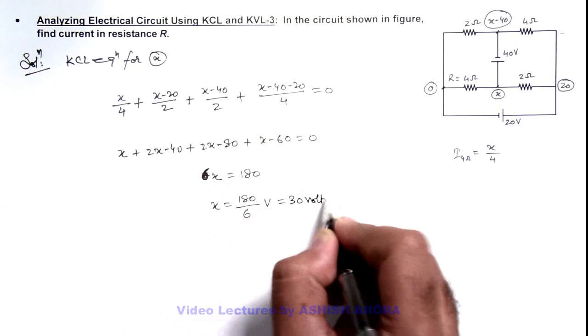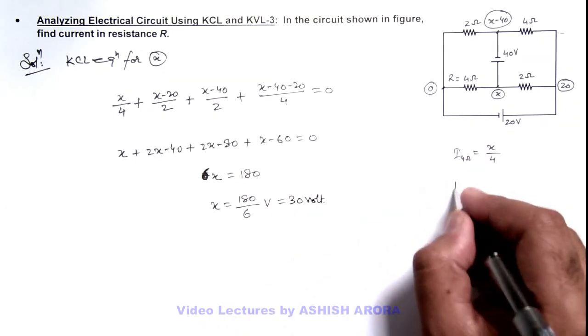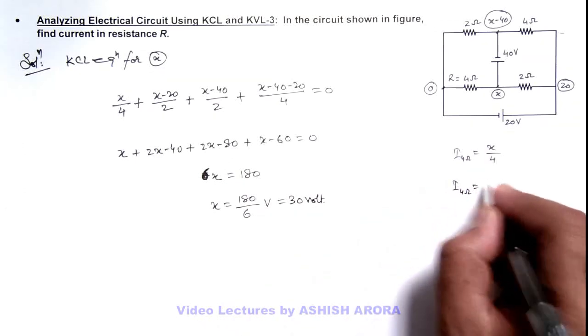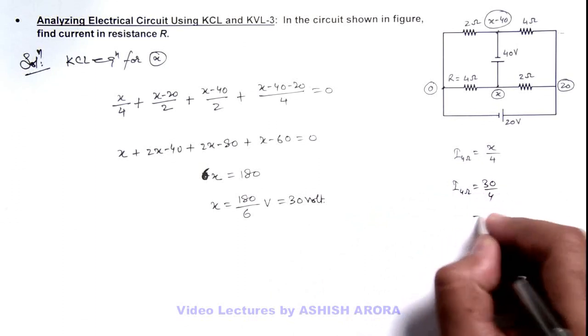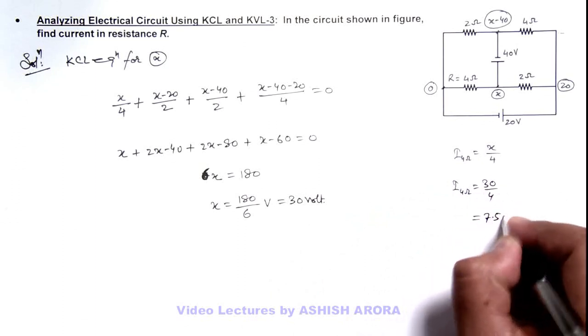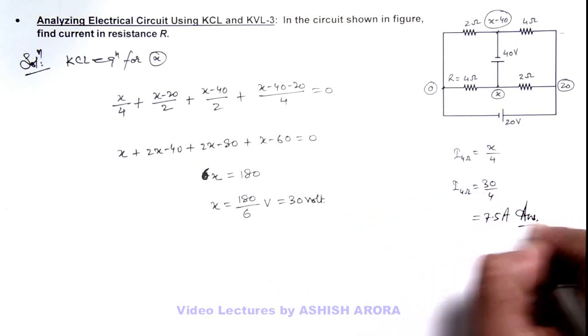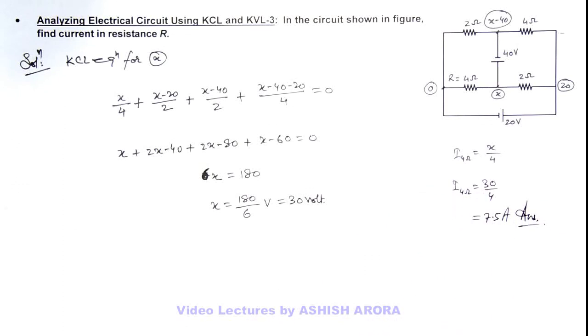So as we are getting the value of x as 30 volt, current in 4 ohm resistance can be written as 30 by 4, which is 7.5 ampere. That is the answer of this problem. So dear students, here we are getting the current in this 4 ohm resistance by using Kirchhoff's current law.